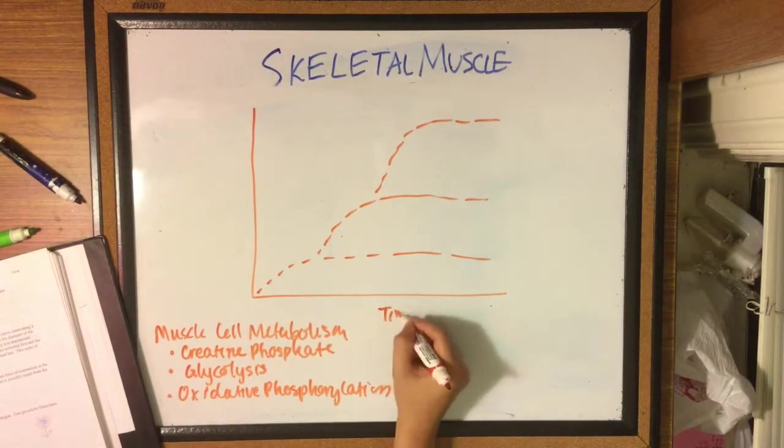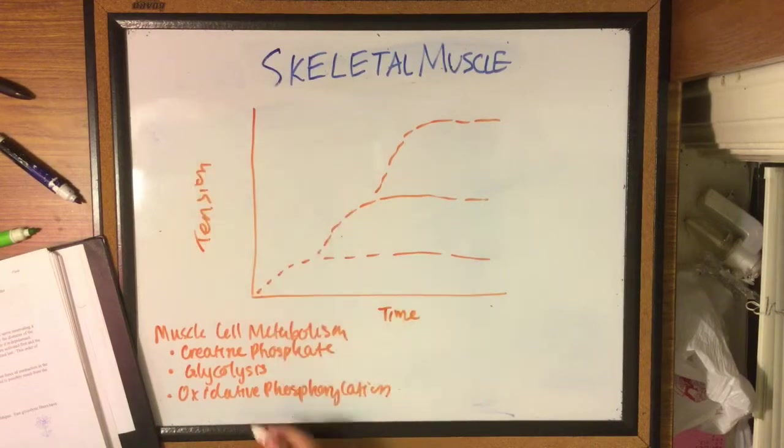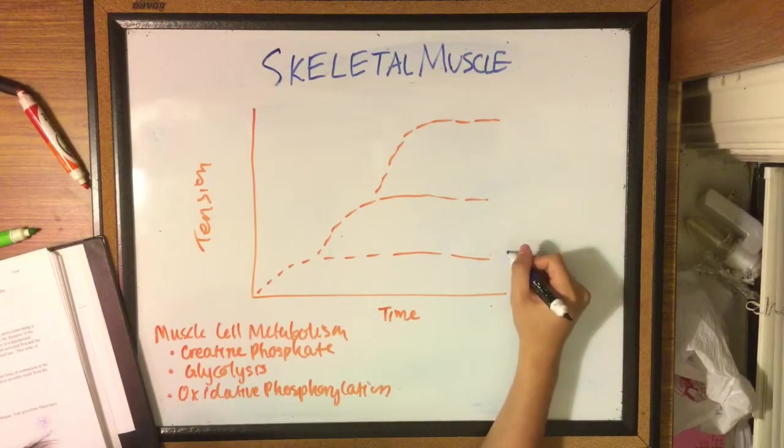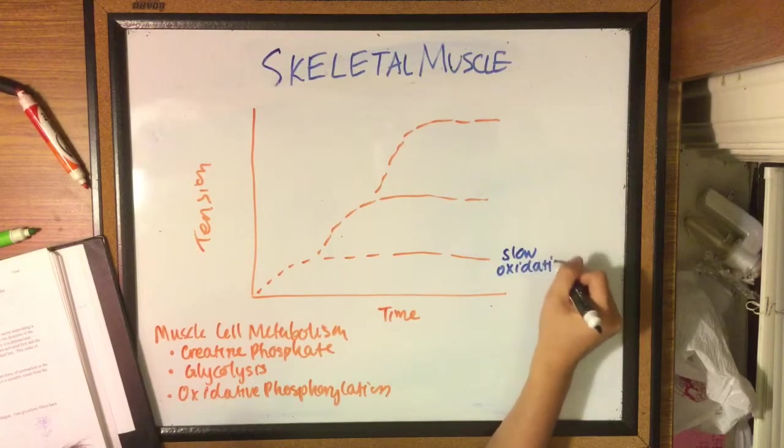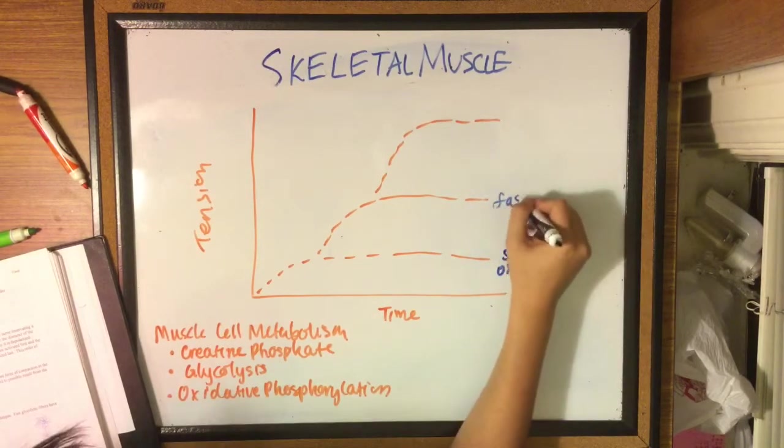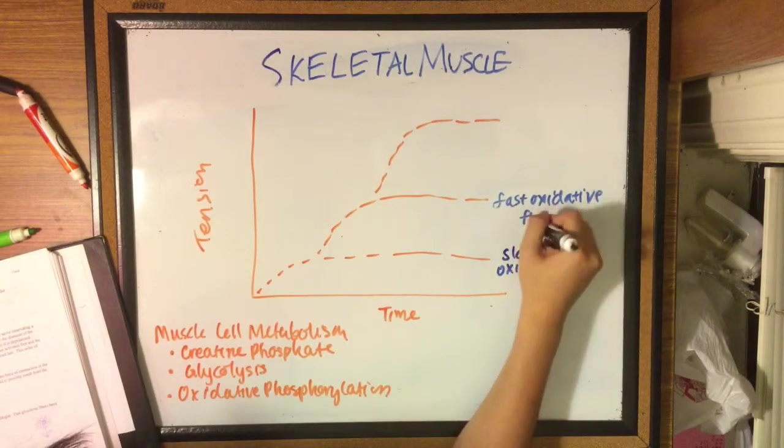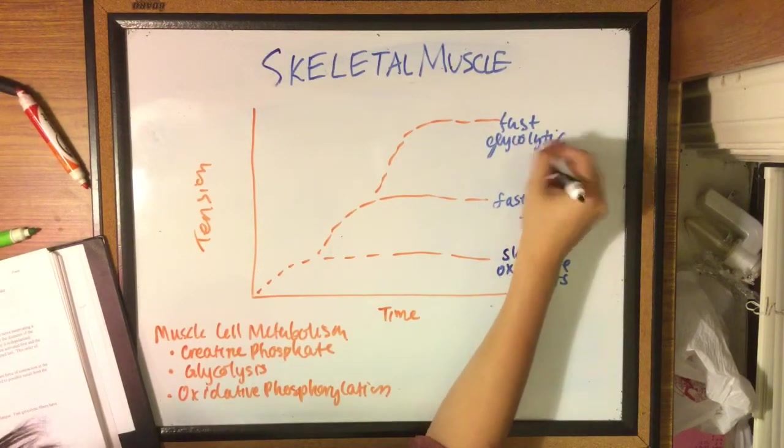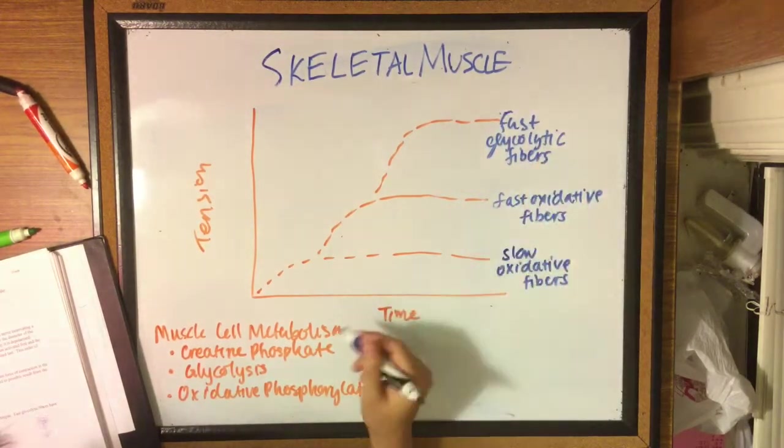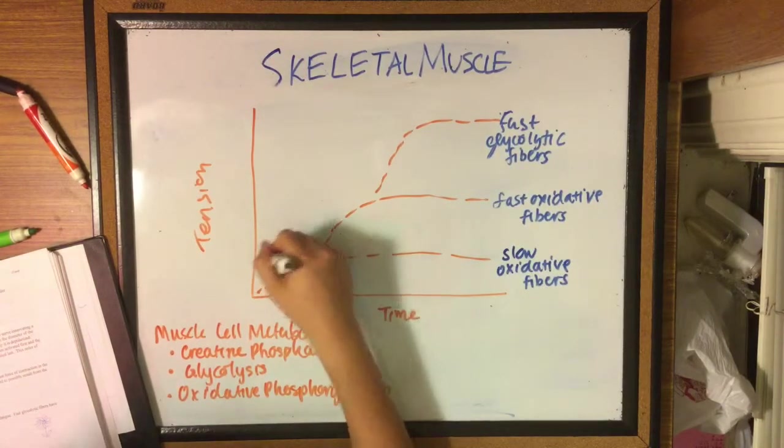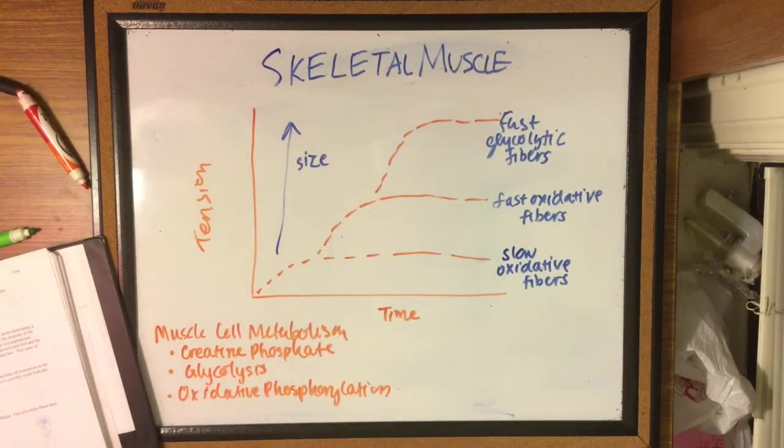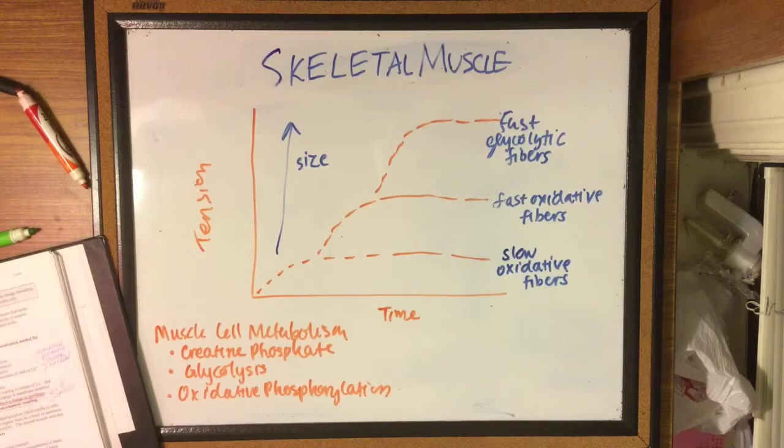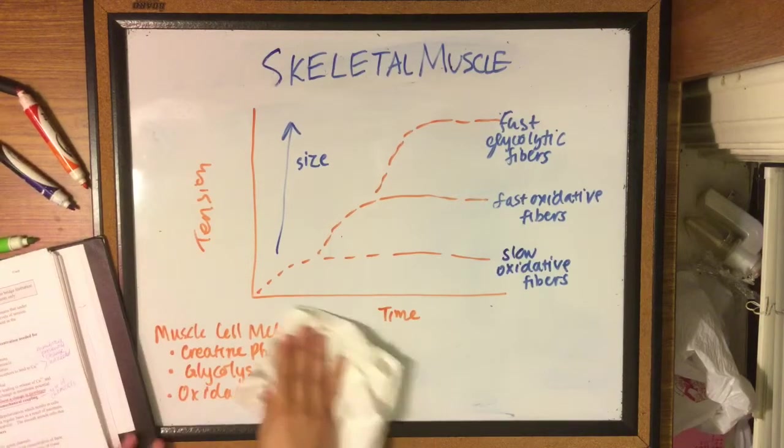The order of recruitment goes from slow oxidative fibers, then fast oxidative fibers, then fast glycolytic fibers. The order of recruitment is related to the diameter of the nerve. Oxidative fibers actually have high resistance to fatigue, whereas glycolytic fibers have low resistance to fatigue, which is probably why they're recruited first.